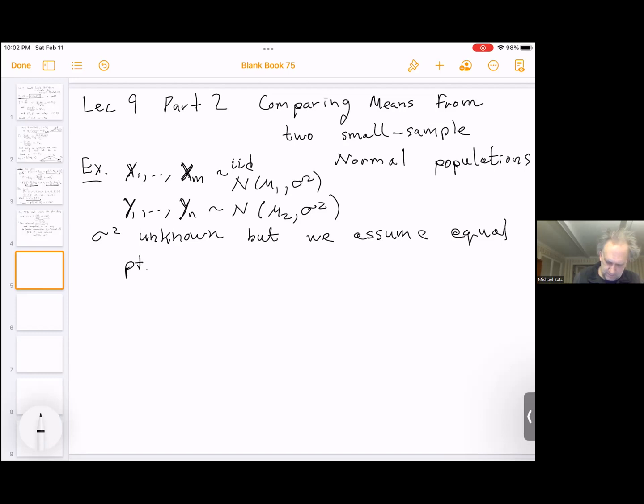So our point estimator is still the same. X bar minus y bar will estimate mu1 minus mu2. This is normal, of course, and it's unbiased. So E of x bar minus y bar is mu1 minus mu2, and variance of x bar minus y bar is equal to sigma squared over m plus sigma squared over n. So taking the square root and factoring the sigma, I could write the standard error of x bar minus y bar is equal to sigma square root of 1 over m plus 1 over n.